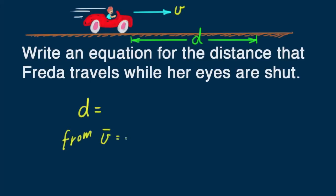I can get distance from the basic equation v equals d over t. From v equals d over t, I rearrange it to read d equals vt. In fact, that's the solution to this problem. The equation tells us that the distance traveled while her eyes are shut is the average speed of the car multiplied by the time during which her eyes are shut.